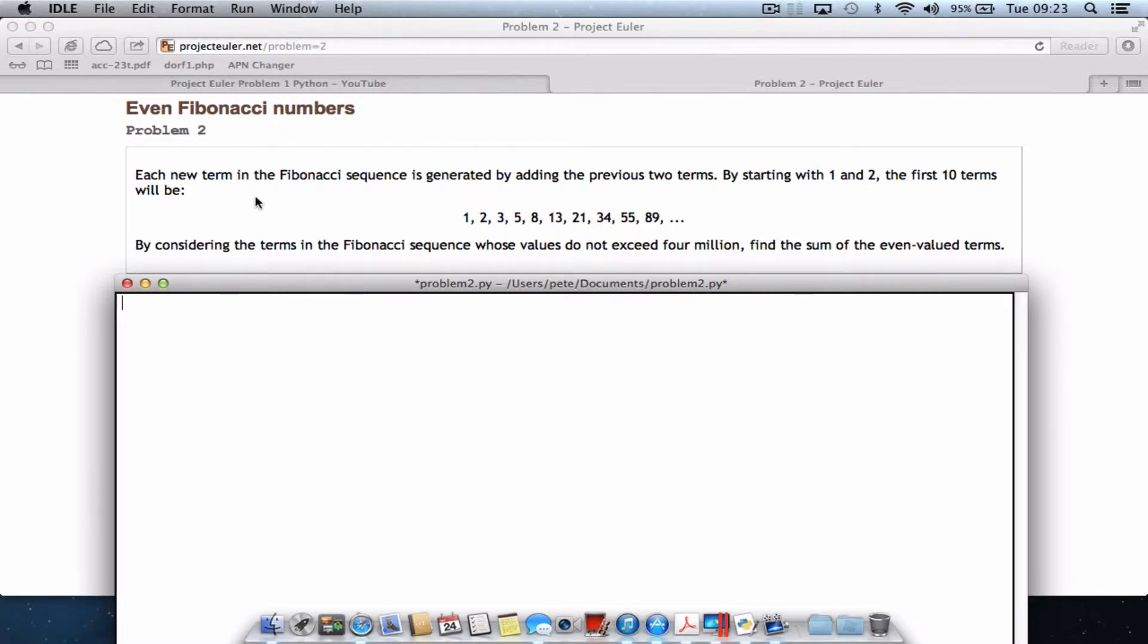In this one we have to take each term of the Fibonacci sequence and find the sum of the even values that do not exceed 4 million. Quite a long winded explanation. The Fibonacci sequence is essentially where you take your two numbers and then add back the previous two numbers.